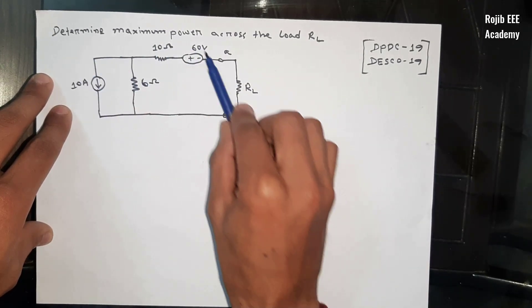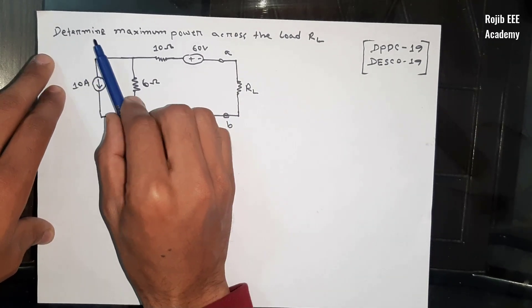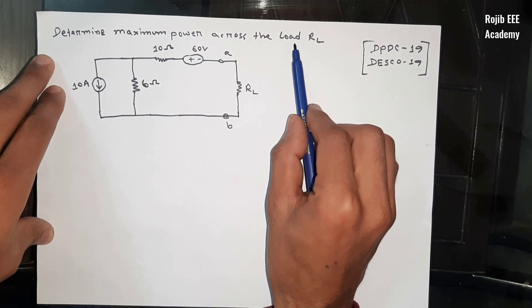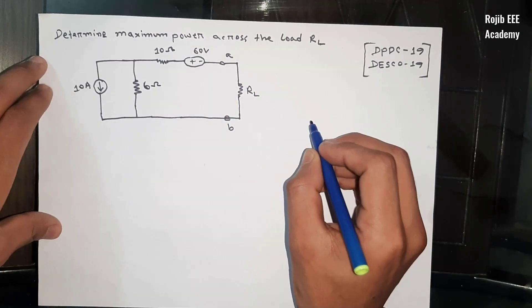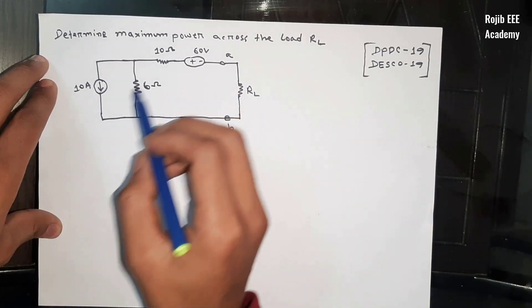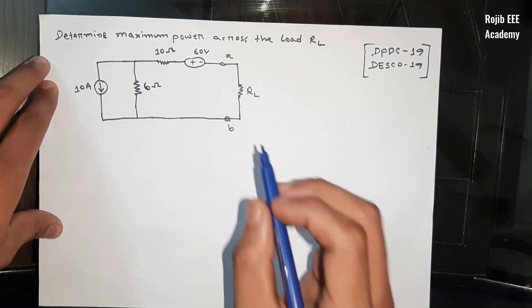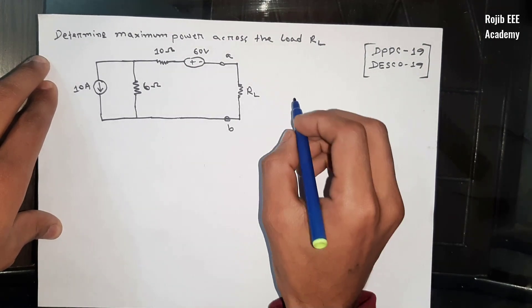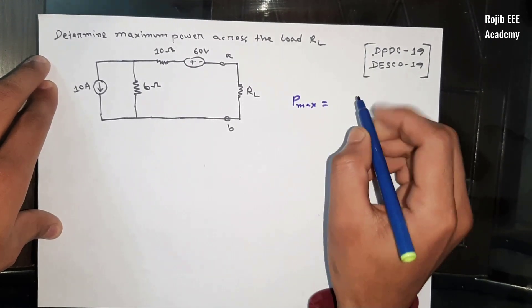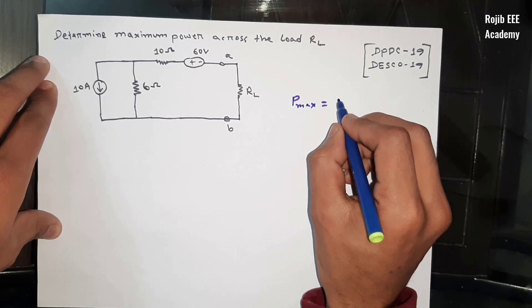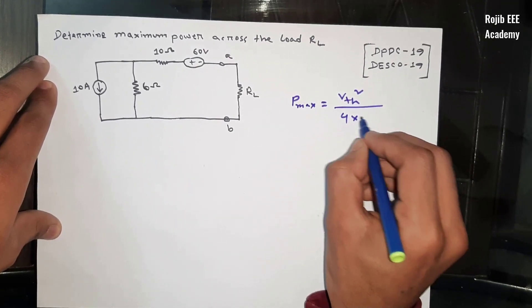The problem asks us to determine maximum power across the load RL. As you can see from maximum power transfer theory, we need to find the connected resistance across the load for maximum power. P maximum is equal to VTH squared divided by 4 into RL.